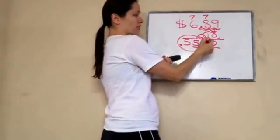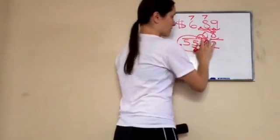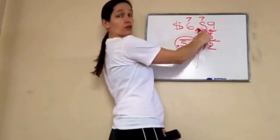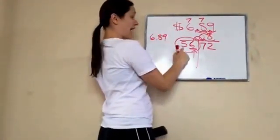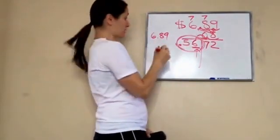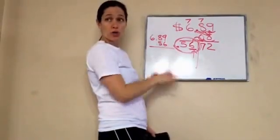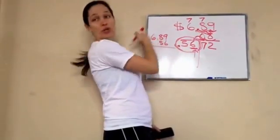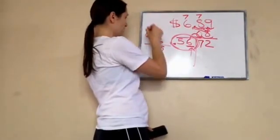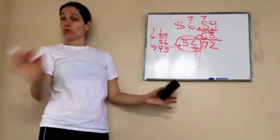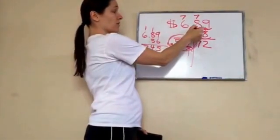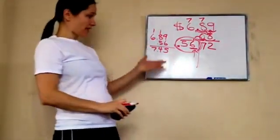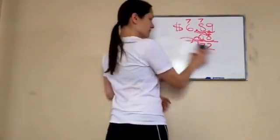So I would take the six dollars and 89 cents and add 56 cents to it to find out the total price of the gobstoppers plus the tax, which is 57 cents. Let's do that real quick. Seven dollars and 45 cents is what you would pay total to Walmart.